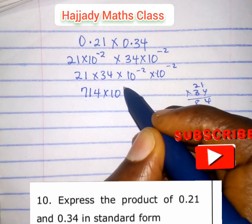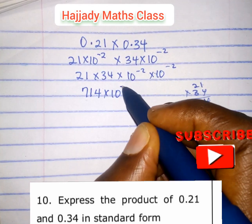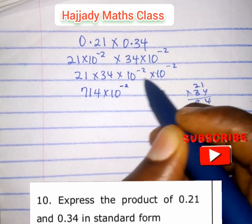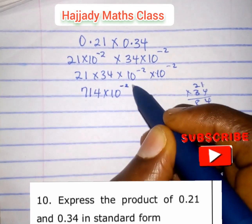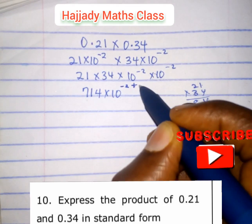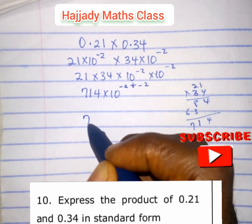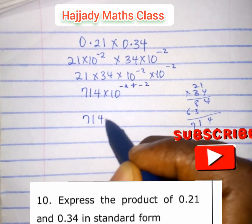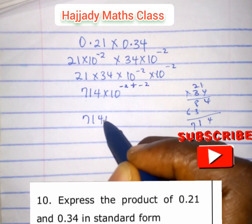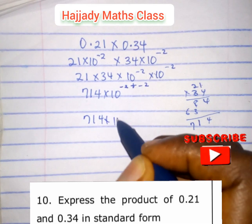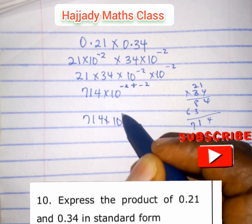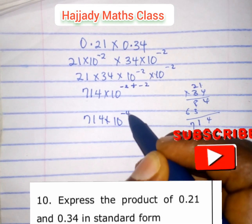So here we have 714 times 10 raised to the power — the law of indices comes in here — minus 2 times turns to addition, we have minus 2.